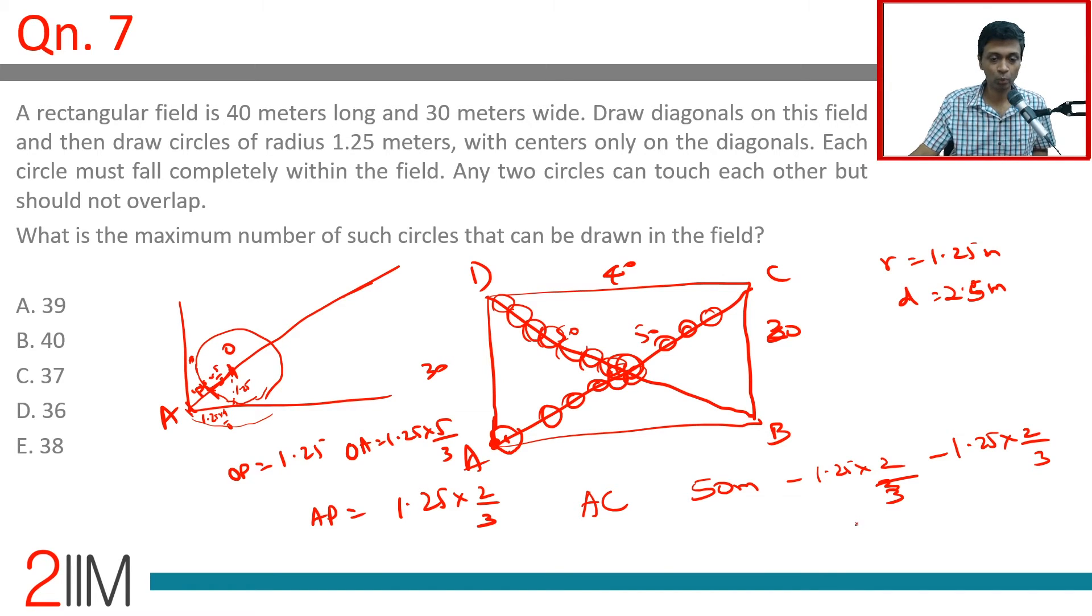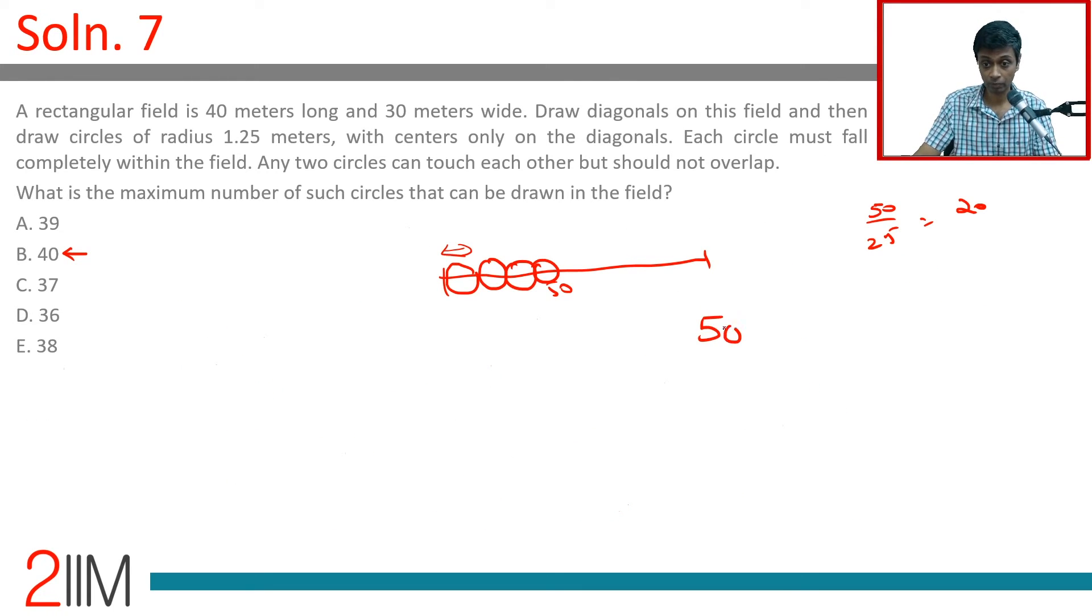Brilliant. So, we cannot draw 50 by 2.5 on this. So, only that many circles can be drawn on this first diagonal. That takes us to 19. Brilliant. We cannot draw 20 diagonals on the first circle. 20 is too tight. That means it will be right up to the edge. So, we put 19 there. We put 19 here. We get 38.